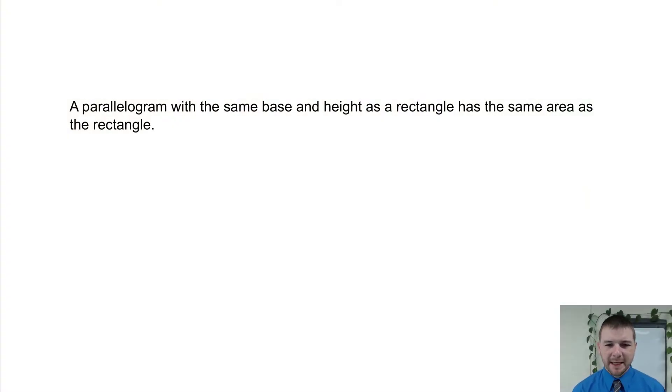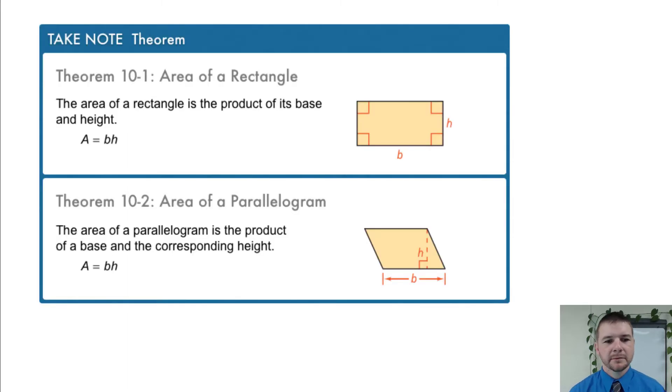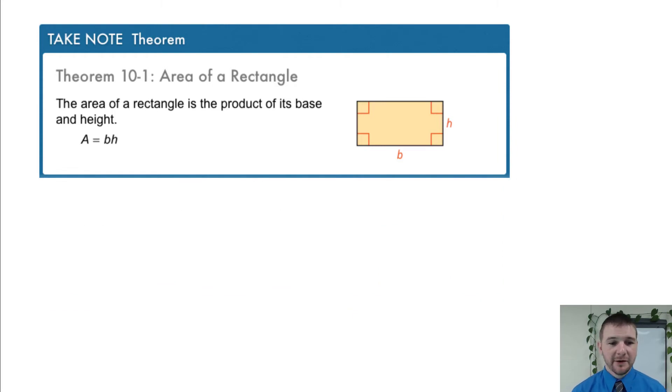A parallelogram with the same base and height as a rectangle has the same area as the rectangle. Theorem 10-1, area of a rectangle. The area of a rectangle is the product of its base and height. Area equals base times height.